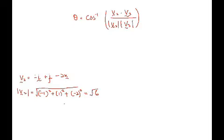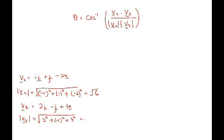And magnitude for V3 is equal to 2I minus J plus 3K. So we have the magnitude for V3 is equal to square root of 2 squared plus negative 1 squared plus 3 squared, which is equal to square root 14.